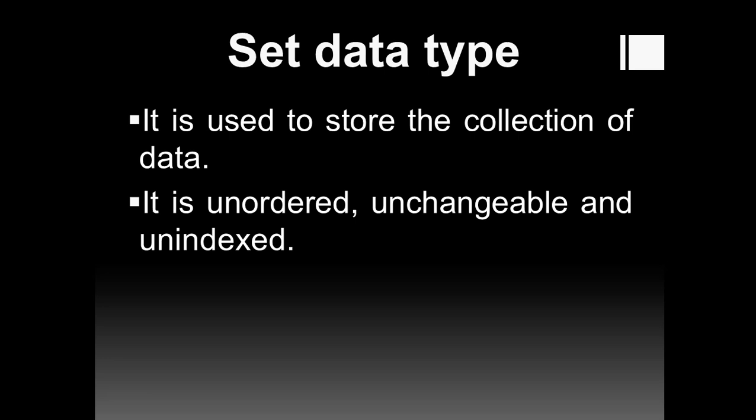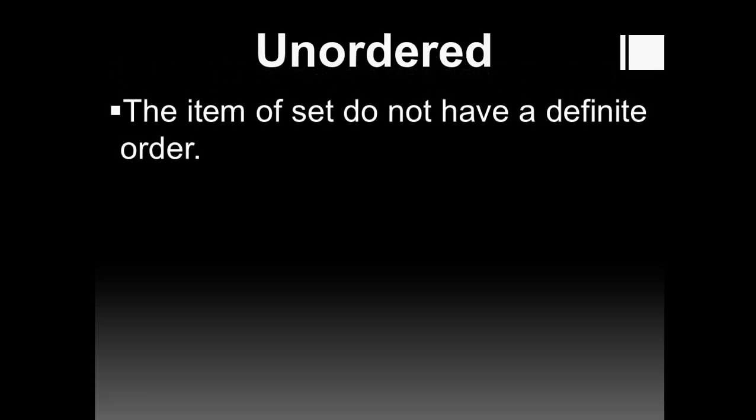Unindexed goes hand in hand with unordered. Unordered means the data is not in a fixed order — there is no indexing like zero, one, two, three. In Python, counting starts from zero, but in the case of unordered data there is no counting at all. Python itself decides which data to pick first and which to pick later in the set. That is why we say the data of the set data type is unordered. If we are using the set data type, the data is unordered and therefore also unindexed — there is simply no counting.